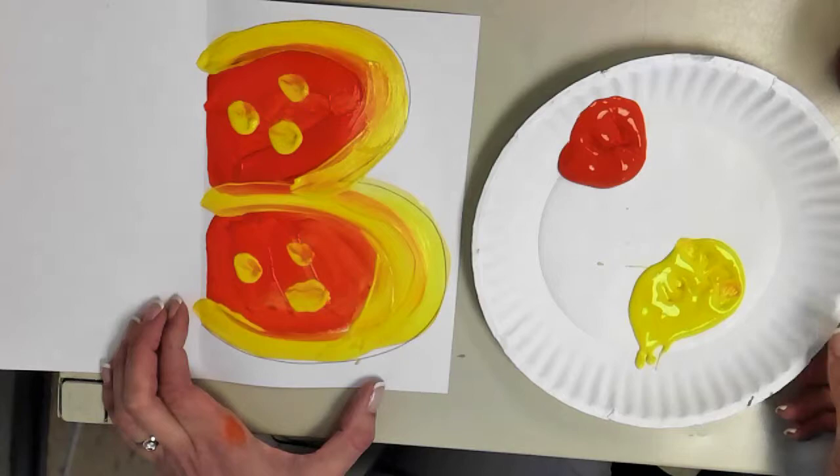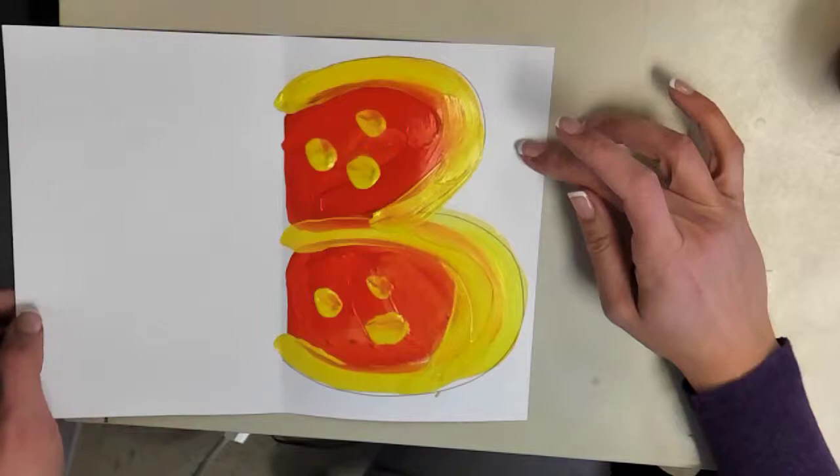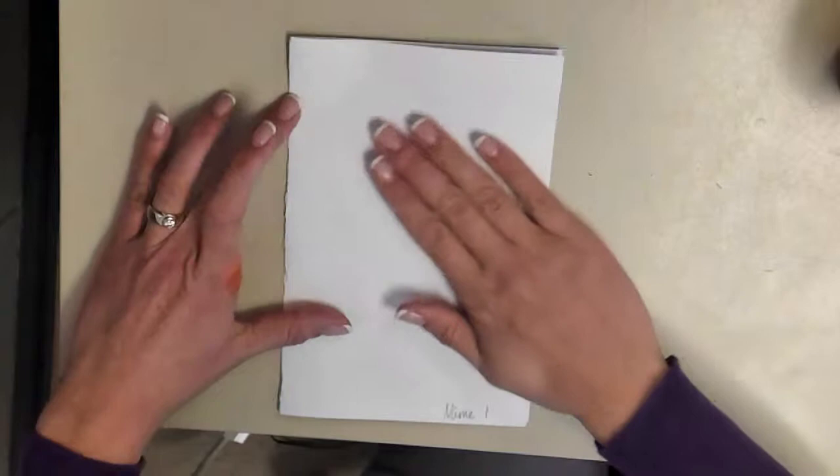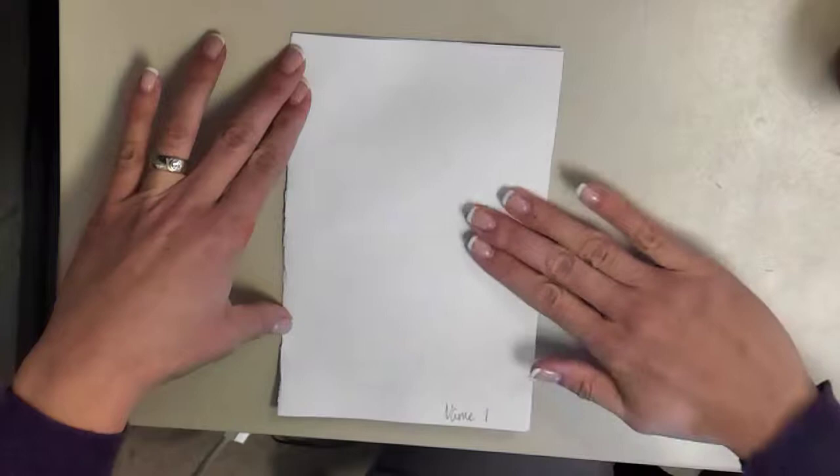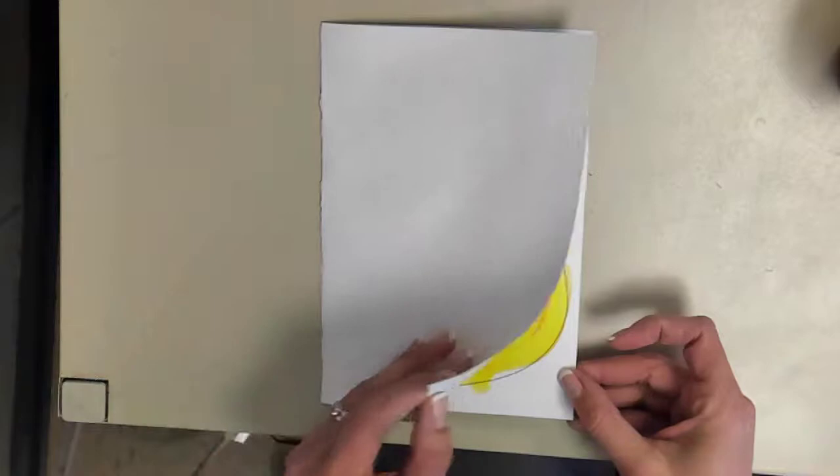Right now I have what looks like a giant B, so if that helps you to put out the wings, draw a giant letter B. And then you're going to fold it back up and you're going to rub, squishing the paint to the other side, and then you're going to open it up to reveal two wings.